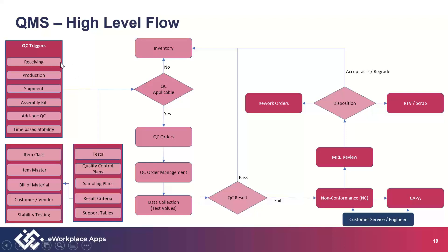The triggers for quality control are: when something's received, when something's produced — both inline as it moves cell to cell and as it comes off the assembly line — when something's shipped, kit assembly, ad hoc inspection such as forklift damage or RMA, and time-based stability. Key within the system is a QC order — the transaction we generate to alert QC that something needs to be inspected. We enter results, the system evaluates them, and if it passes it goes into inventory. If it fails, we can generate a non-conformance transaction, which can also generate a corrective and preventive action workflow.